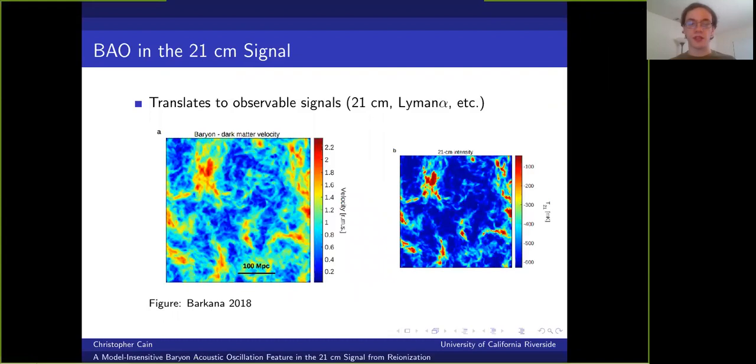Now these features can make their way into the 21 centimeter signal and other observables like the Lyman-alpha forest through a number of avenues. Anytime the stream velocity impacts a physical process that in turn affects an observable signal, it imprints its spatial fluctuations on that signal. And I've shown here a plot from Barkana 2018 that illustrates how the stream velocity and the 21 centimeter signal can be strongly correlated on hundreds of megaparsec scales.